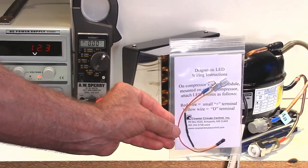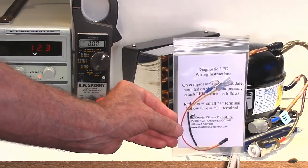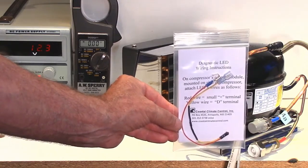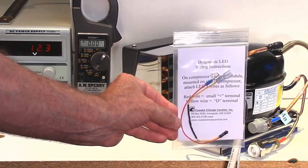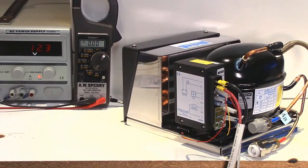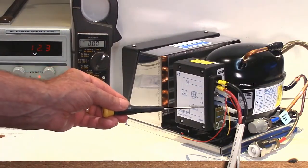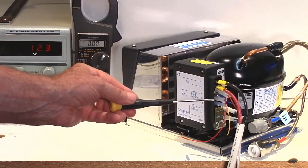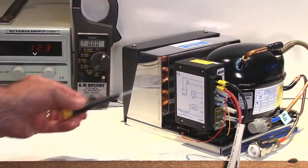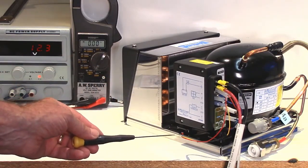Now if you have a diagnostic LED installed like this one that you can buy from Coastal Climate Control, it's simply a 12 volt LED that plugs into the positive and the D terminal on the controller. We have one here already installed. The yellow wire is on the D terminal and the red is a piggyback that can go either on the fan positive or the main positive coming in.